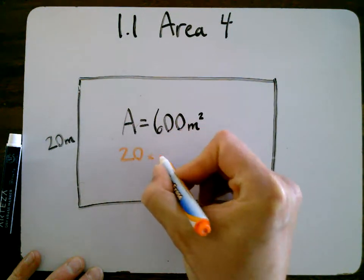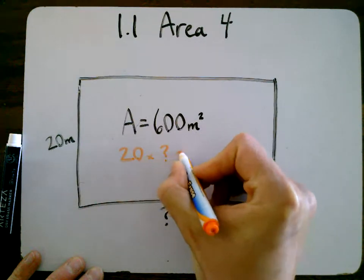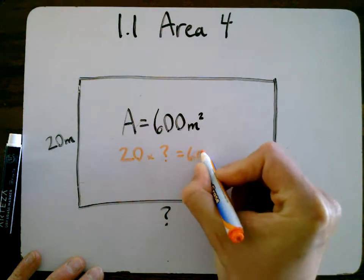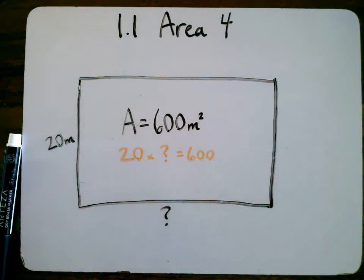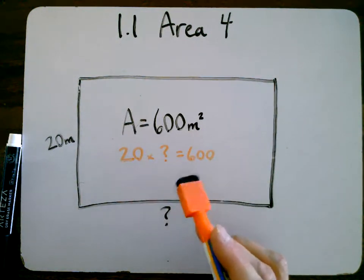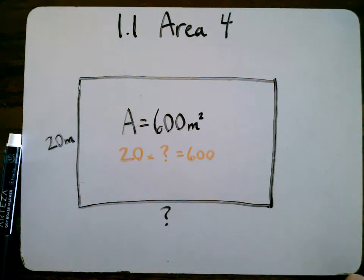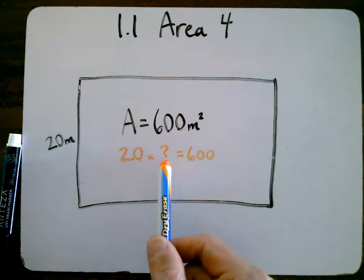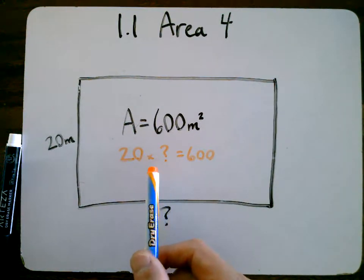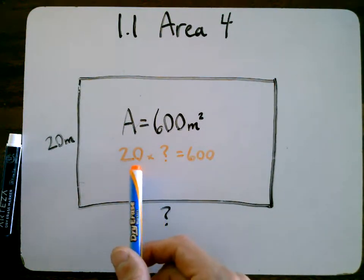20 times something equals 600. So you might just start thinking about what numbers might make sense. You might even just pick something, put it in there, say 10. What would this be if this was 10? 20 times 10 would be 200.